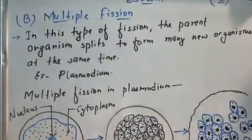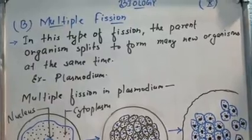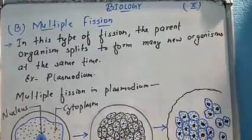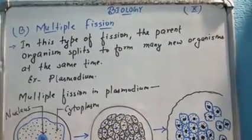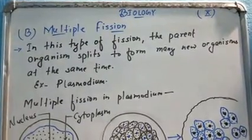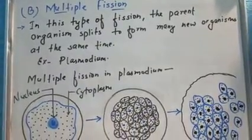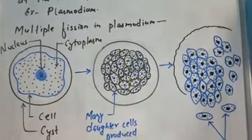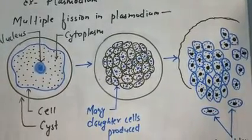Now, multiple fission: in this type of fission, the parent organism splits to form many new organisms at the same time. Binary fission में एक cell divide होकर two cells में convert होता था, पर यहाँ पर एक cell से कई सारे cells बनते हैं। इसका example है Plasmodium, जो एक protozoan है। यहाँ पर देखिए, यह single parent cell है जिसमें nucleus है, cytoplasm है, और cell के बाहर एक covering है जिसे हम लोग cyst कहते हैं।